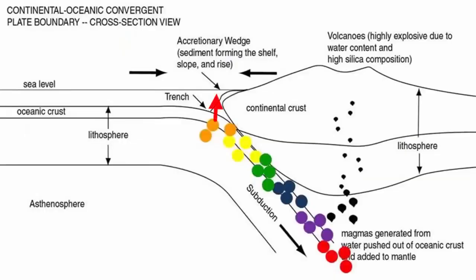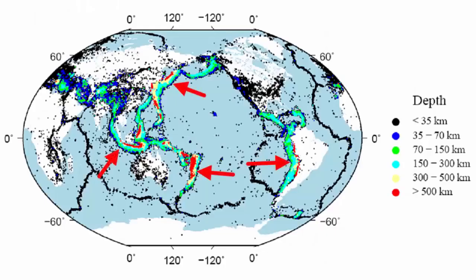Over subducting plates, we would expect shallower earthquakes near the top of the subducting plate, near the trenches, and progressively deeper and deeper focused earthquakes as the plate descends. In fact, the earthquake data confirm this, and maps like these provide an image of the location of the subducting plate and the geometry of the subduction zones.